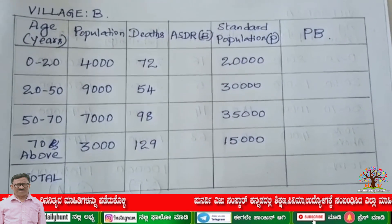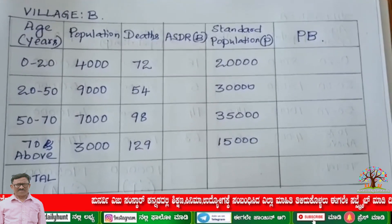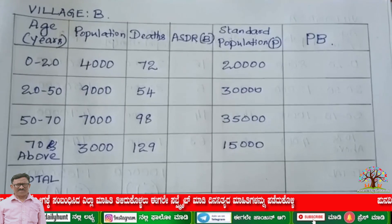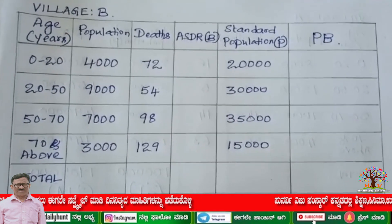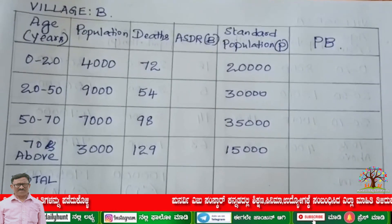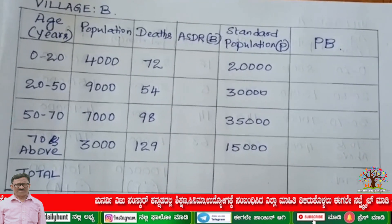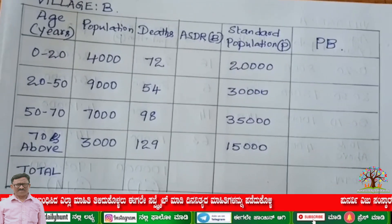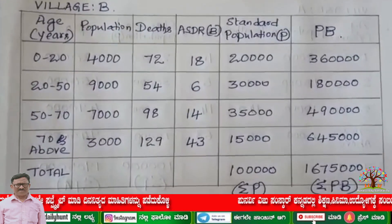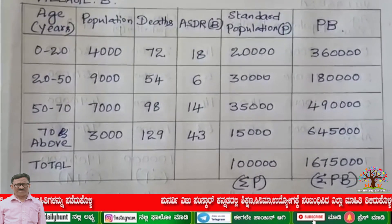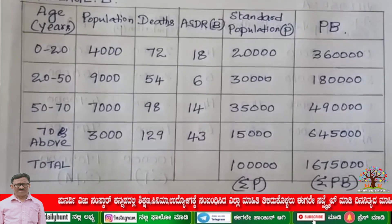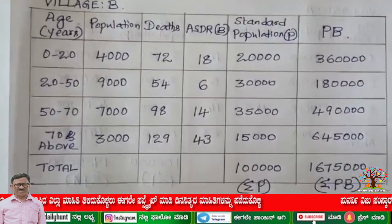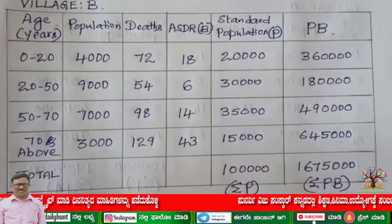Write the same type of table for village B. Age, population, and deaths are given for village B. Write ASDR — capital B inside the bracket — standard population column, and PB column. Leave ASDR and PB blank initially. Now calculate ASDR and PB and fill up the columns. Summation P is the same as for village A — 1 lakh — and summation PB is 16,75,300.